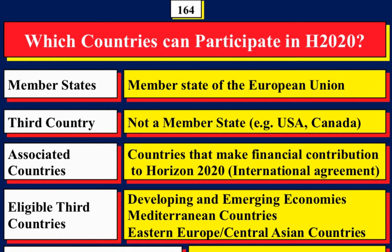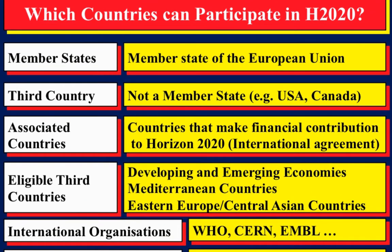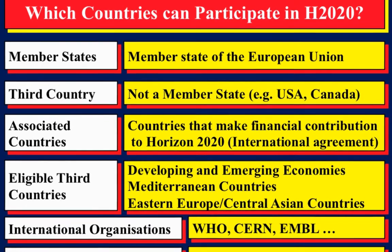I want to look at the list of countries that can receive funding, and I'll also say a few words about countries like America, Australia, and China that can participate but where they bring their own funding. An international organization is one that is part of international agreements — for example, the World Health Organization and CERN are both based in Geneva but they are not Swiss partners.